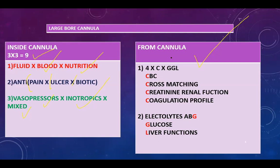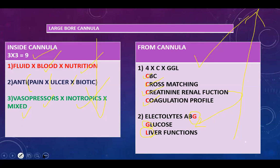What will you obtain from the cannula? The four C's: CBC, cross-matching for blood, coagulation profile, and creatinine with renal function. Then ABG, and from the G's: glucose and liver function tests. So you put fluids in — input — and take blood samples out — output. Input, output.